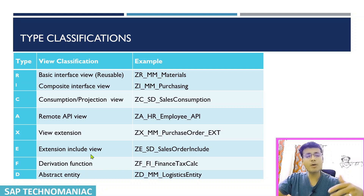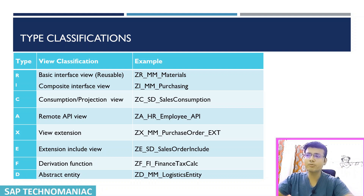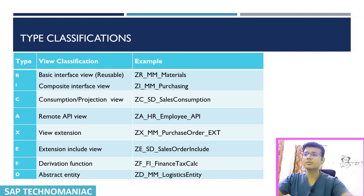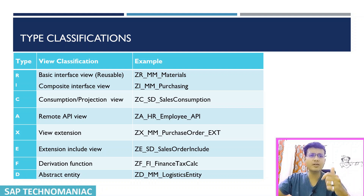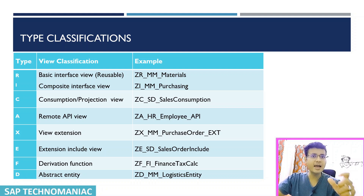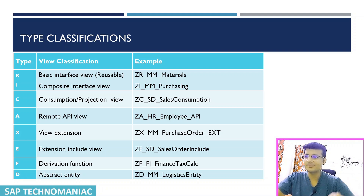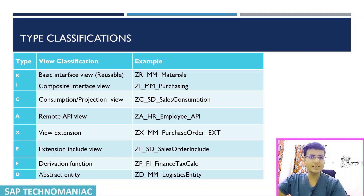For the derivation function — CDS views used only for calculation purposes — you can use ZF to indicate that calculation or some function is being performed. For the abstract entity, which is a CDS that only has types (similar to a structure), use ZD. These are the naming conventions you can follow, and if something is missed, you can discuss further in the comment section.